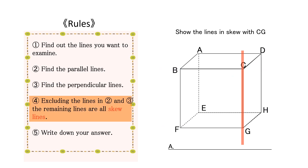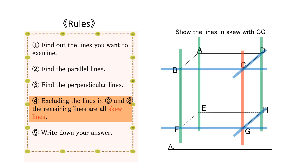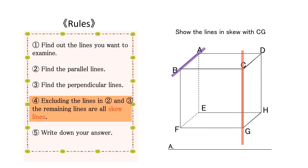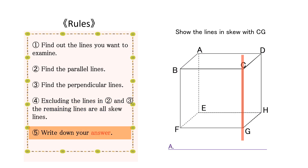Next, we exclude the parallel and perpendicular lines that we have just obtained. Doing so, the remaining four lines are AB, AD, EF, and EH. Finally, write down your answer. Be careful not to leave anything out.